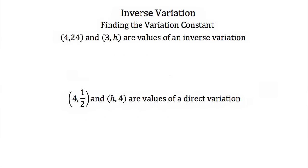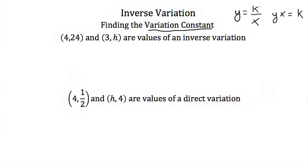Inverse variation equations can be used to show a relationship between x and y. Typically they're written as y is equal to k over x, or sometimes as y times x is equal to k. Now if we're given a point — here we're given (4, 24) and (3, h) — these are values of an inverse variation, so we can find our inverse variation equation. The first thing we have to do is find our variation constant, or find k.